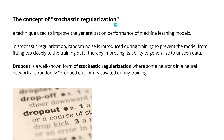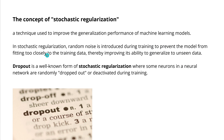The concept of stochastic regularization is a technique used to improve the generalization performance of machine learning models. We want to introduce some noise during the training phase to prevent the model from fitting too closely to the training data. What we want is to improve the ability of the model to generalize to unseen real-time data — not a perfect fit for the training data, but generalization to unseen data.